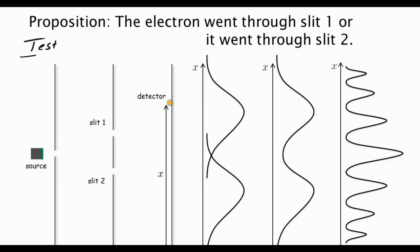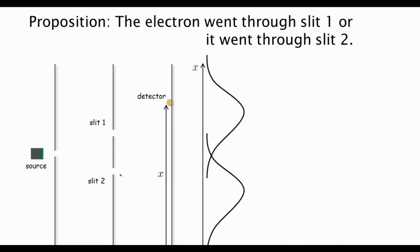We are going to design an experiment that will test this proposition. What we are going to do is place a source of light very close to the slit to try to detect whether the electron went through slit 1 or through slit 2. An electron will scatter light, so if the electron is going through slit 1, we will detect it there, or similarly for slit 2. Let's do this and see what happens.